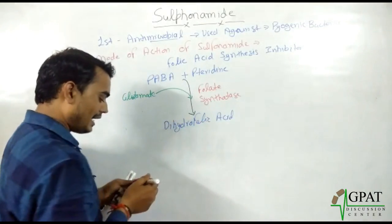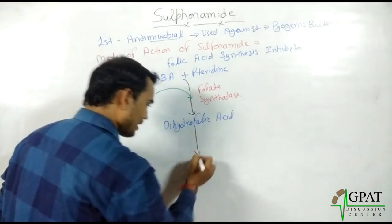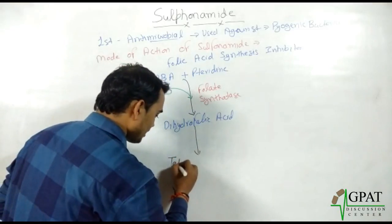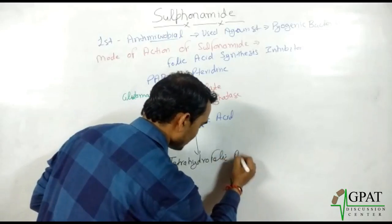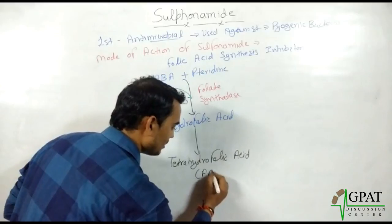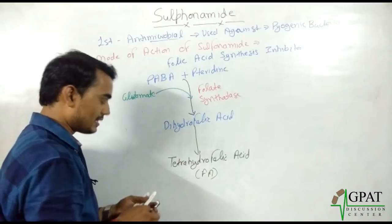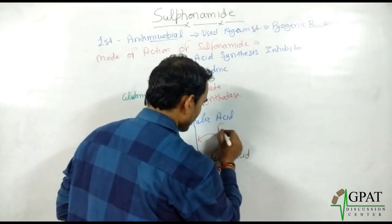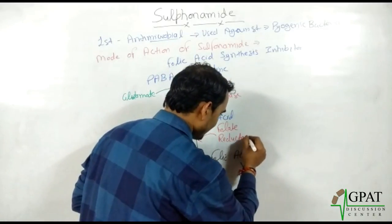This dihydrofolic acid is then converted by an enzyme to form tetrahydrofolic acid, which is commonly known as folic acid. This conversion of dihydrofolic acid into tetrahydrofolic acid is catalyzed by the enzyme folate reductase.